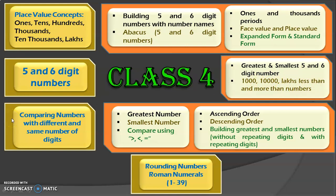In this video, we are going to see the learning outcome of comparing numbers. The other learning outcomes are rounding numbers and learning to write Roman numerals from 1 to 39. If you are here for the first time, please visit my video on class 4 learning outcomes under number concepts — the link is given in the description box and in the i-card section. I have dealt with place value concepts and number activities on 5 and 6 digit numbers in separate videos, links for which are also in the description box and i-card section.